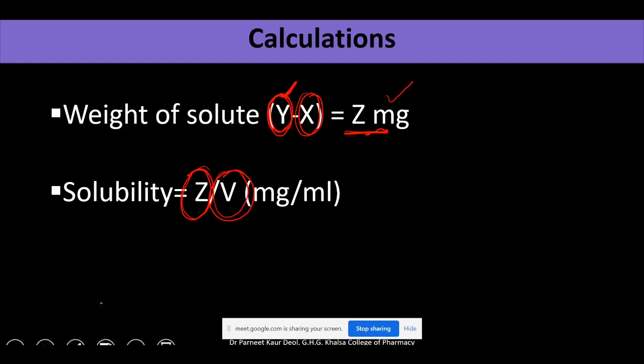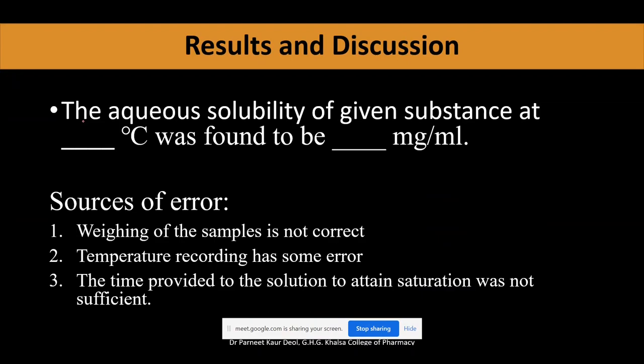In result and discussion you will write: the solubility of the given substance at the temperature which you have recorded was found to be X mg per ml. Don't forget to add this unit at the end of your result. In every practical you have to write sources of error. Sources of error: we can have variability from the already reported solubility value. I have written two three reasons, you can think about more reasons and add into your files. I have written: weighing of the sample is not correct, temperature recorded has some errors, the time provided for the solution to obtain saturation was not sufficient.